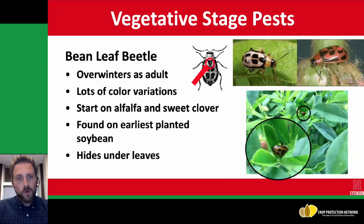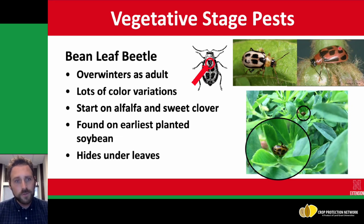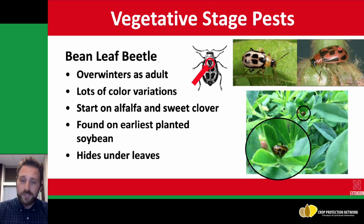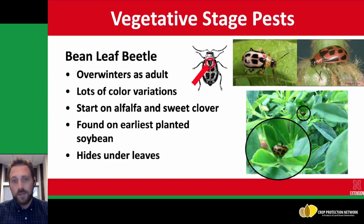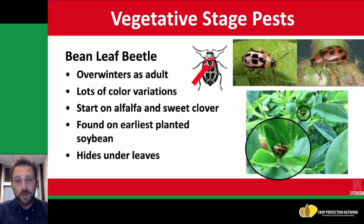After plants have emerged and even just slightly poked through the ground, one of the first insects you might come across on soybeans is bean leaf beetle. This insect overwinters as an adult, and you can see there are several different color variations. You may be saying those four dots look pretty diagnostic, but actually it's the triangle behind the head that is most diagnostic of this particular insect. Sometimes they don't have any spots; they can also be yellow in color, so there are a lot of different color variations. Early in the season they'll start on alfalfa and sweet clover and other plants.